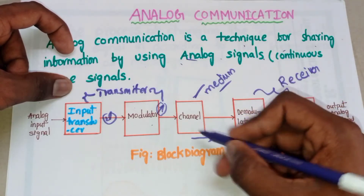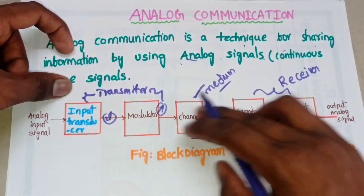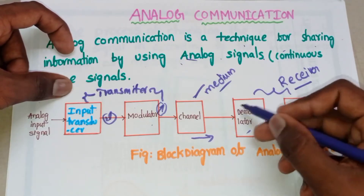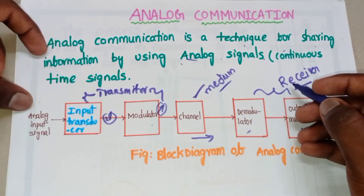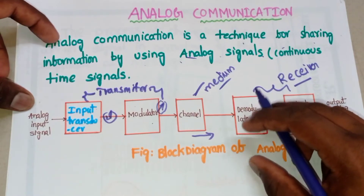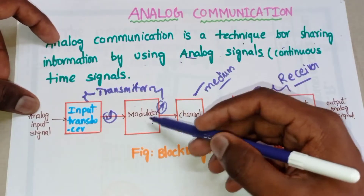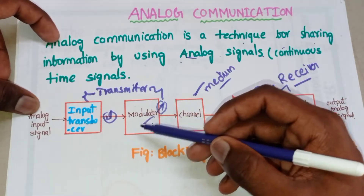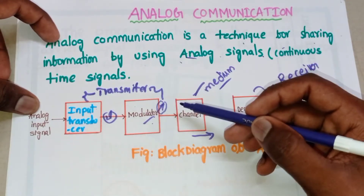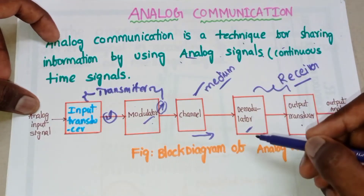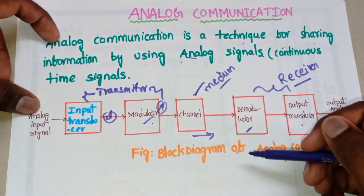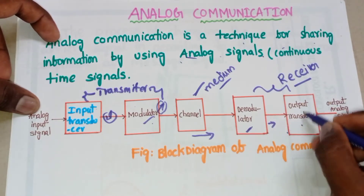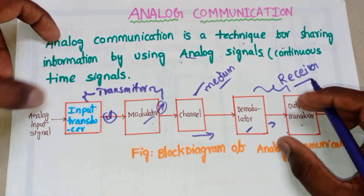The channel is the free space or medium used to transmit the data from the transmitter to the receiver. After the channel, at the receiver section, we have the demodulator. The demodulator performs the reverse operation of the modulator — at the modulator we perform an operation that enables transmission over greater distance, and the demodulator reverses that operation.